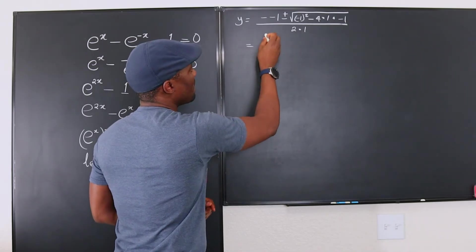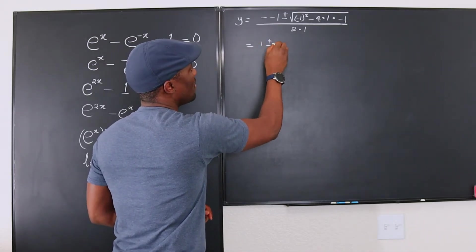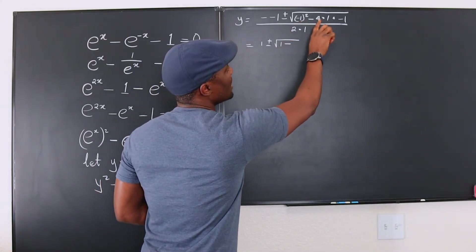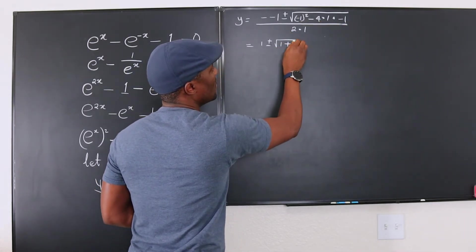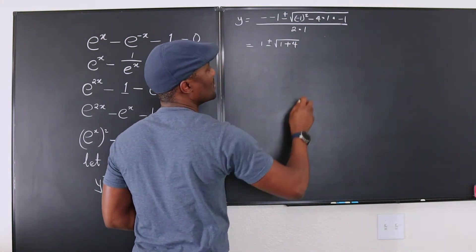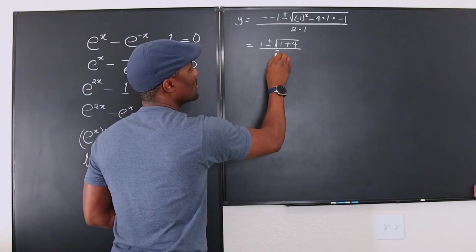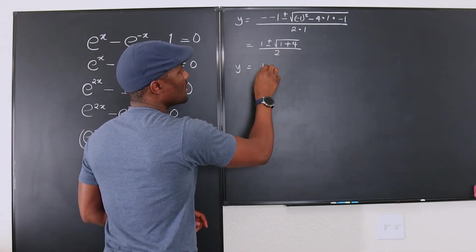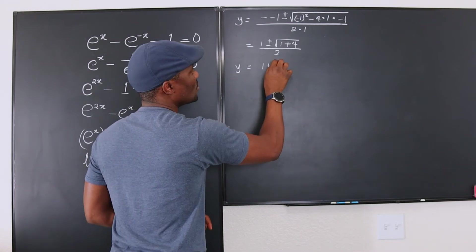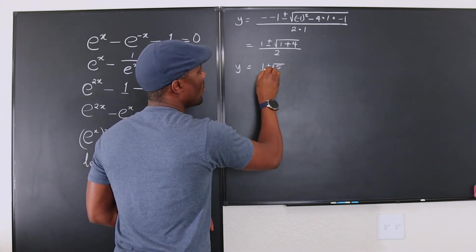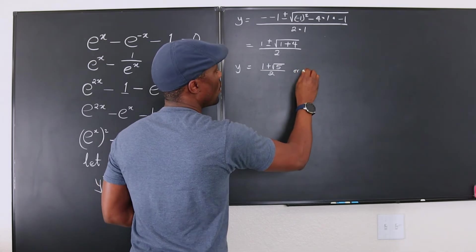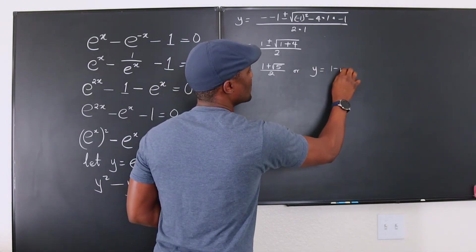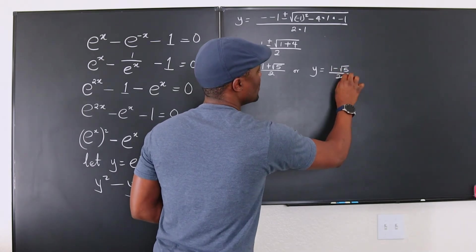So this is going to be positive 1 plus or minus square root of, this is 1 minus, this is going to be plus 4. Negative 4 times negative 1 is positive. And that gives you 2. So your y is going to be 1 plus square root of 5 over 2. Or y equals 1 minus square root of 5 over 2.